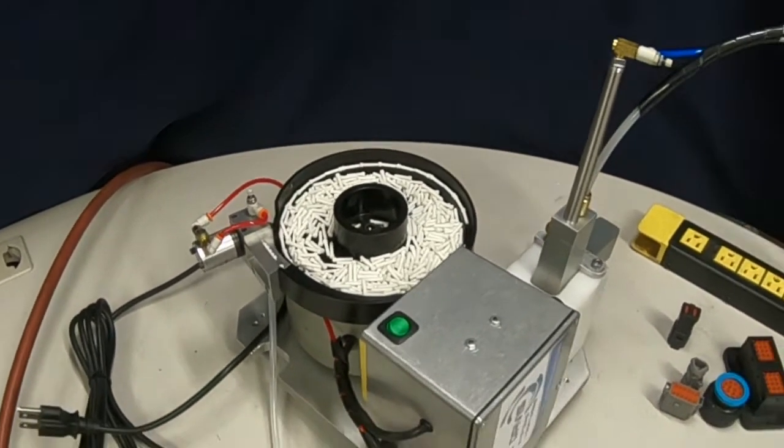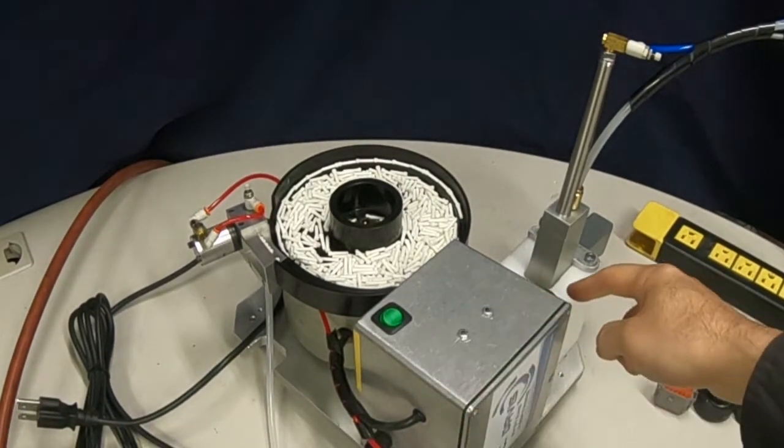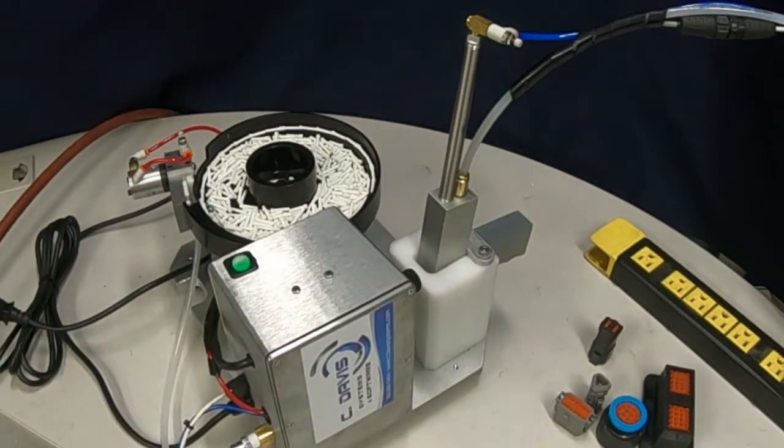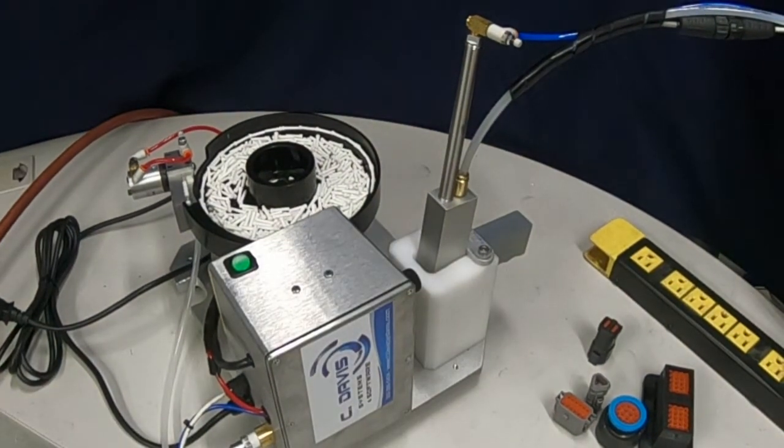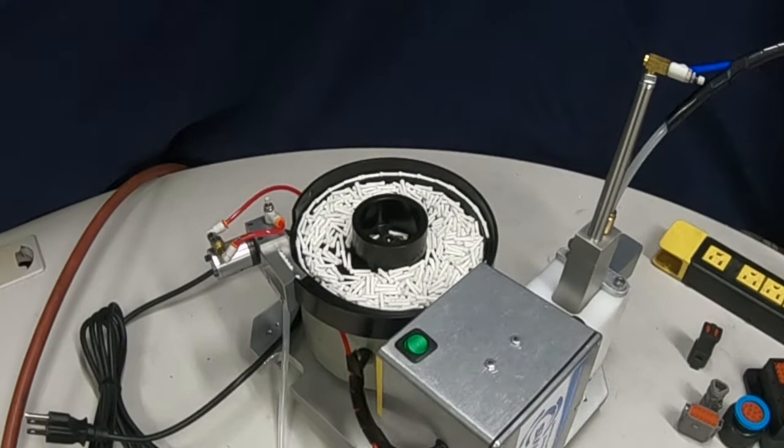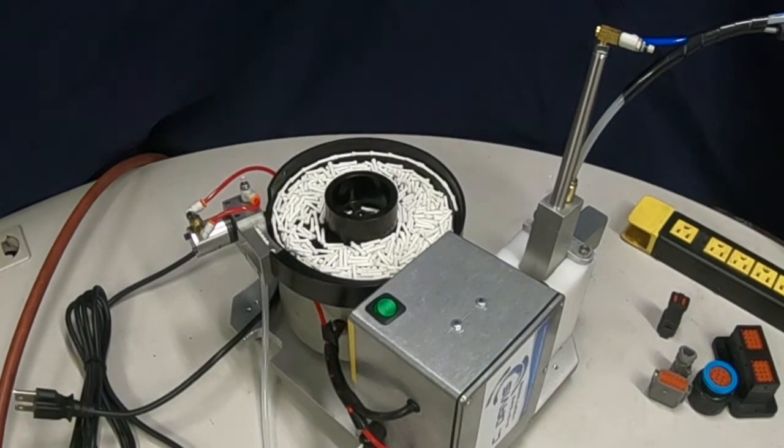There are two controls on the new cabinet. There's a power switch and then over here on the side is a bowl speed control and the bowl speed once you get it set really doesn't need to be messed with and many of our customers actually remove the knob so their employees don't mess with the bowl speed.